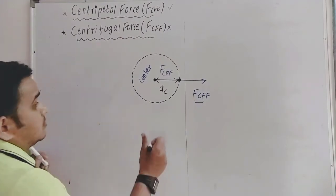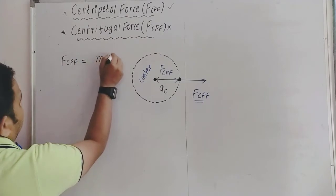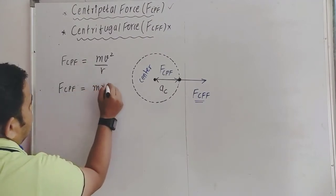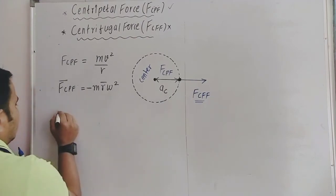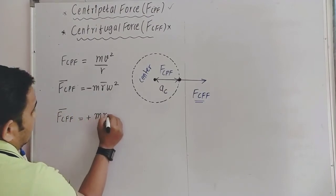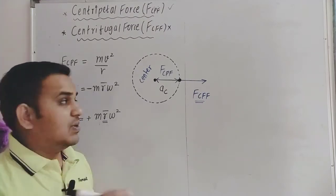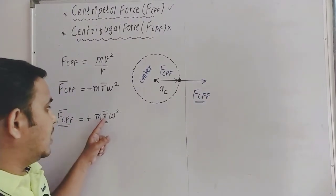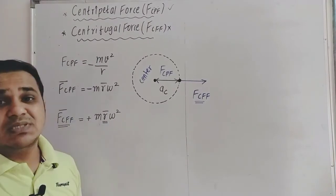Centrifugal force is exactly opposite to centripetal force. Since centripetal force magnitude is mv²/r or m·r·ω², centrifugal force in vector form does not carry a negative sign. So centrifugal force Fcff = +m·r̄·ω², and its magnitude is +mv²/r. The direction is the same as the radius vector — away from center.